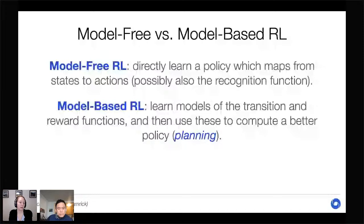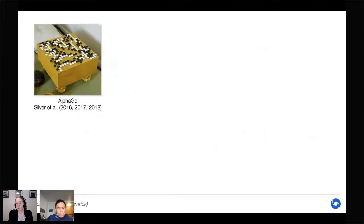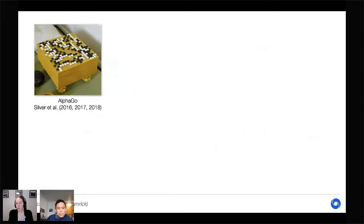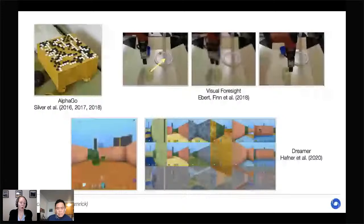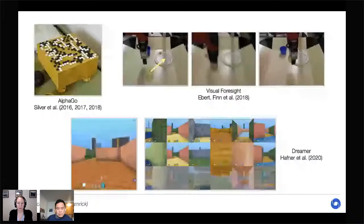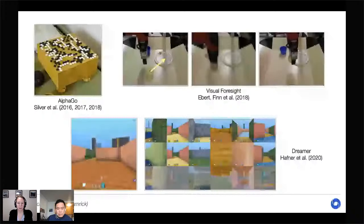Model-based RL has been very successful in solving difficult tasks including board games like Go — AlphaGo uses a model-based approach — robotic manipulation with models like Visual Foresight that allow an agent to imagine what it will see in order to pick up objects, and embodied navigation as in the Dreamer agent, which imagines what it would see if it took particular actions, enabling learning from hypothetical scenarios to navigate mazes and collect rewards.